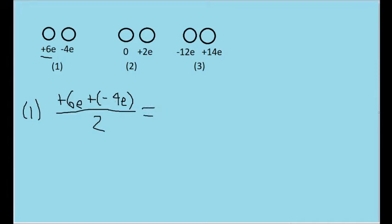So 6 plus negative 4, that's just 6 minus 4, or 2E divided by 2, and that's just equal to E, or positive E. So the total charge in each sphere in pair one after the transfer is positive E in each sphere. Now we'll do this with the other two scenarios.